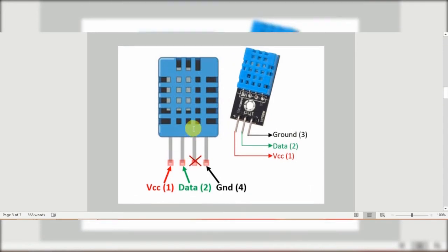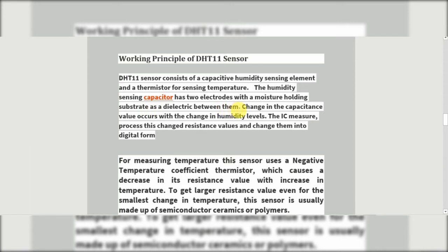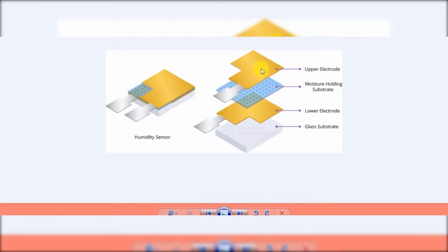Working principle of the DHT11 sensor: the DHT11 sensor consists of a capacitive humidity sensing element and a thermistor for sensing temperature. The humidity sensing capacitor has two electrodes with a moisture-holding substrate as a dielectric between them. A change in capacitance value occurs with the change in humidity level. The IC measures and processes this change in resistance value and converts it into a digital form. In this picture, you can see the upper electrode, the lower electrode, and the moisture-holding substrate.